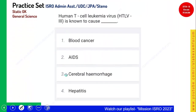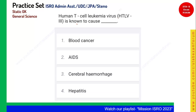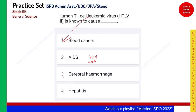Human T-cell leukemia virus HTLV-3 is also known to cause which of the following? Leukemia is also called blood cancer, so remember the leukemia virus can cause blood cancer. Whereas AIDS is caused by the human immunodeficiency virus (HIV). Cerebral hemorrhage is a breakdown of nerves in the brain. Hepatitis is also called jaundice, caused by the hepatitis virus. Option 1, blood cancer, is the correct answer.